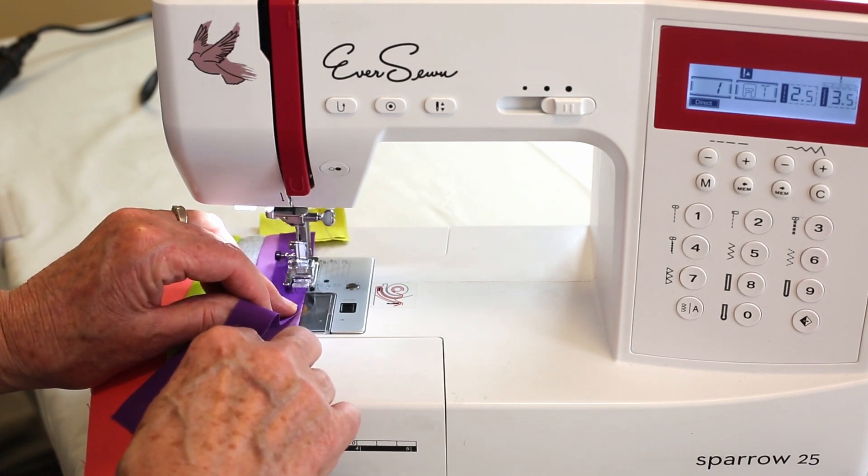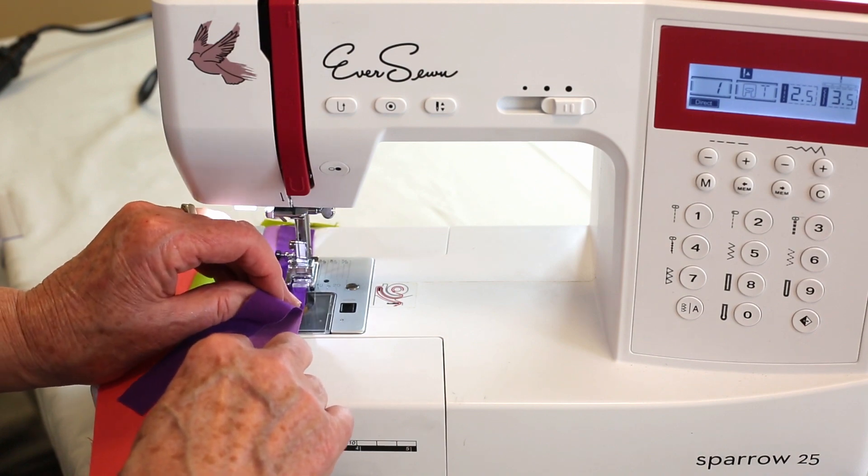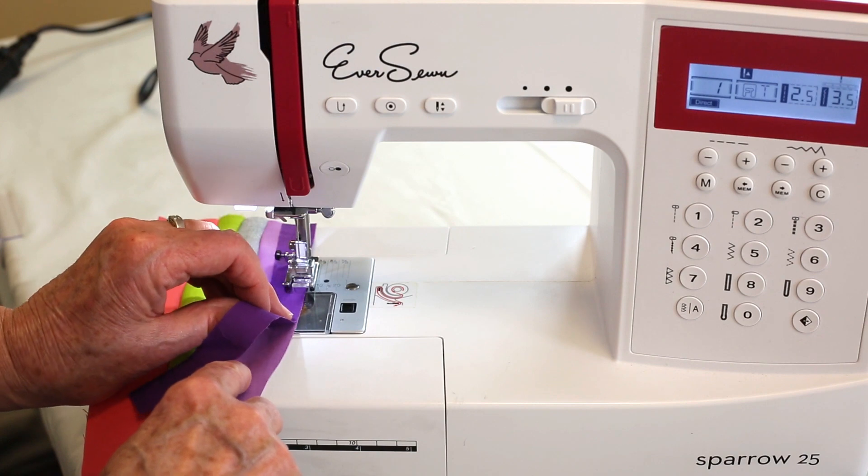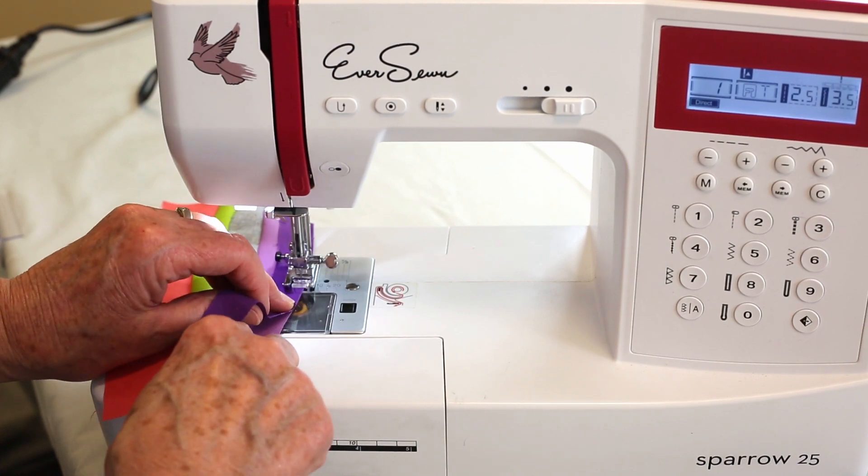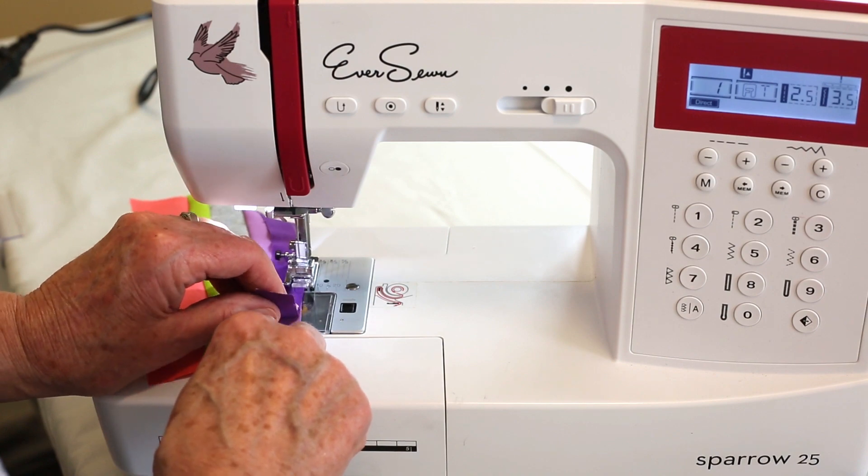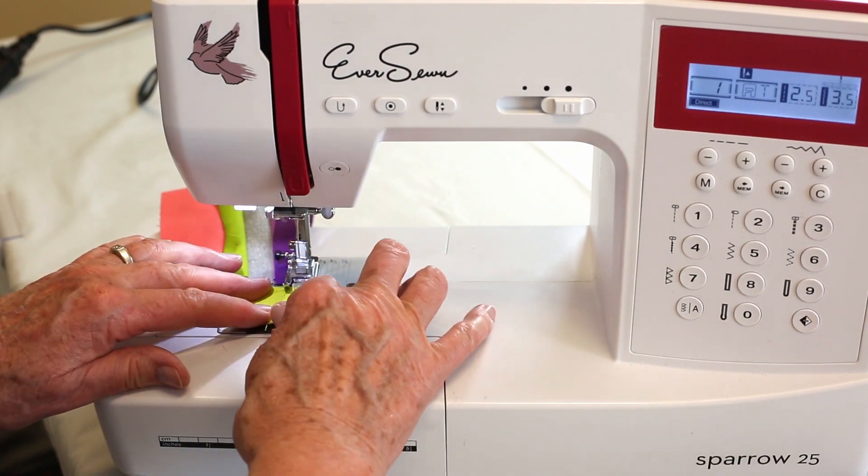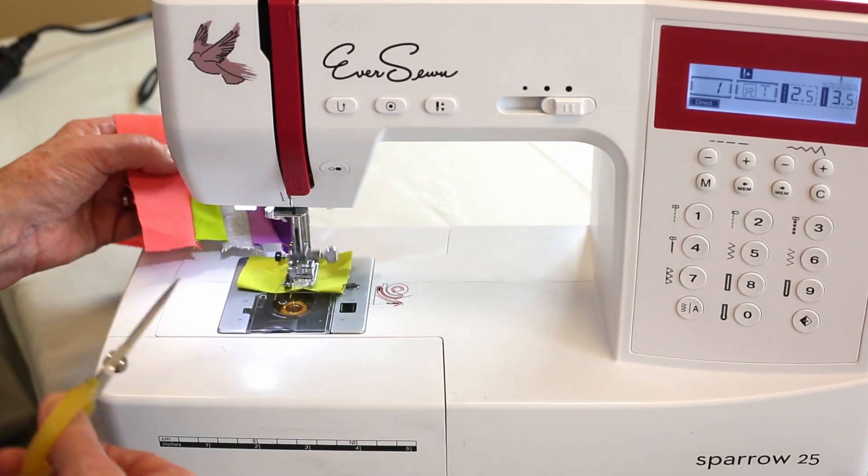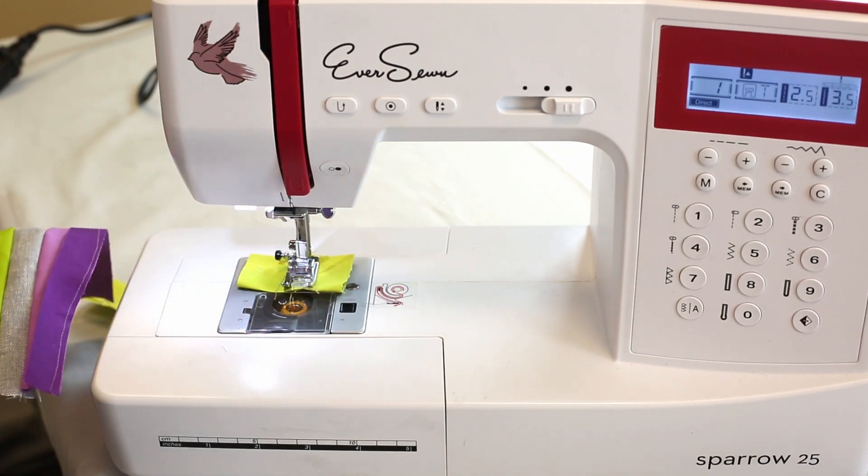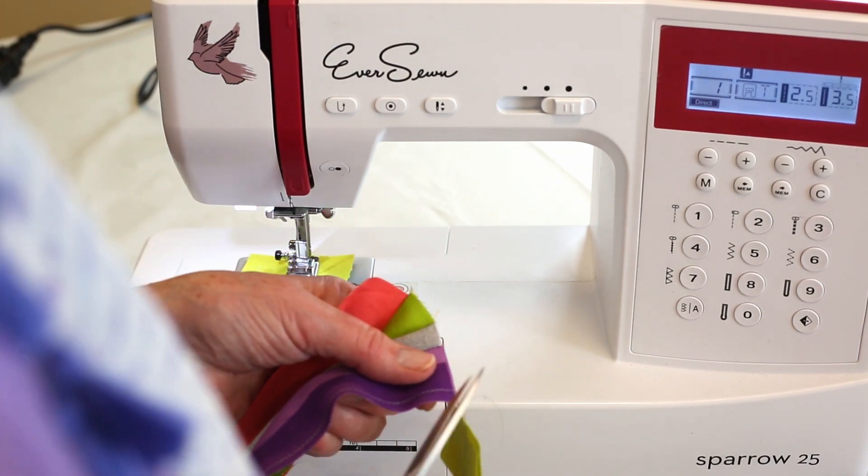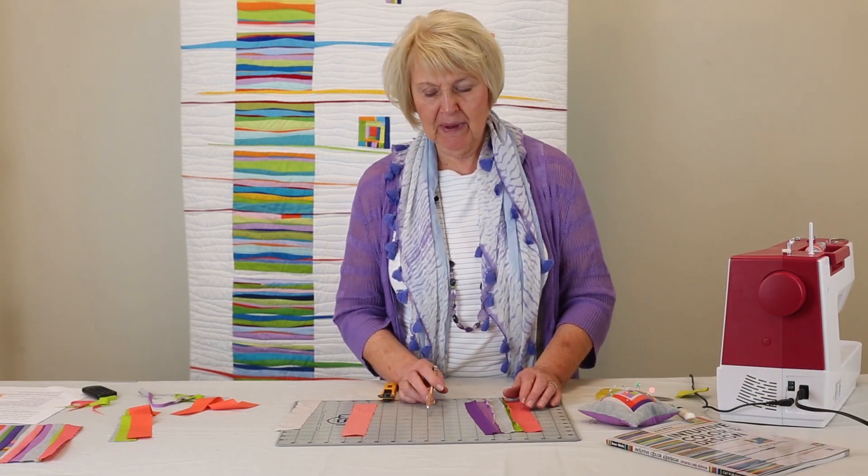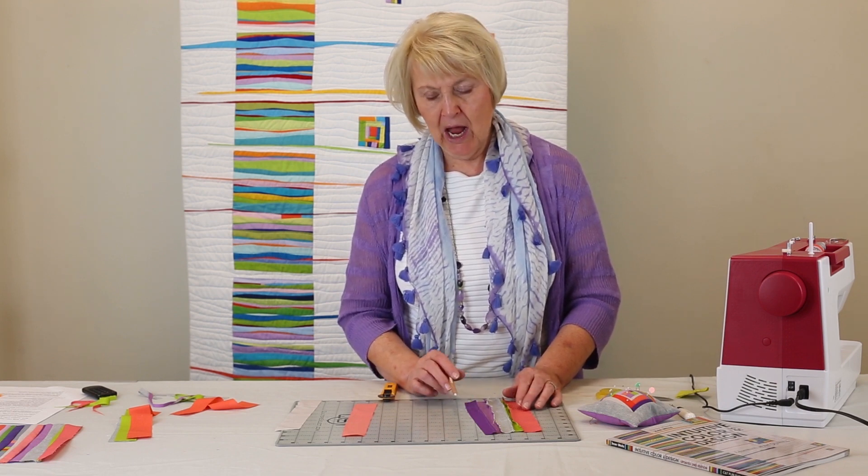The next step is to take a chalk pencil, or you can take a lead pencil if you're working on a light colored insert. I'm going to mark my stitching line for the next seam so I want to be able to see it.